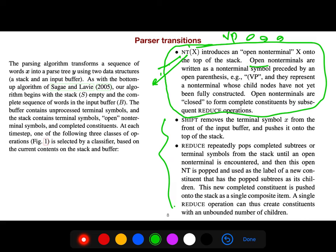You will say it later. Verb phrase, something. So, this is a kind of non-terminal action that you should do. Because open non-terminals are written as non-terminal symbols preceded by an open parenthesis. For example, a verb phrase, and they represent a non-terminal whose child nodes have not yet been fully constructed.